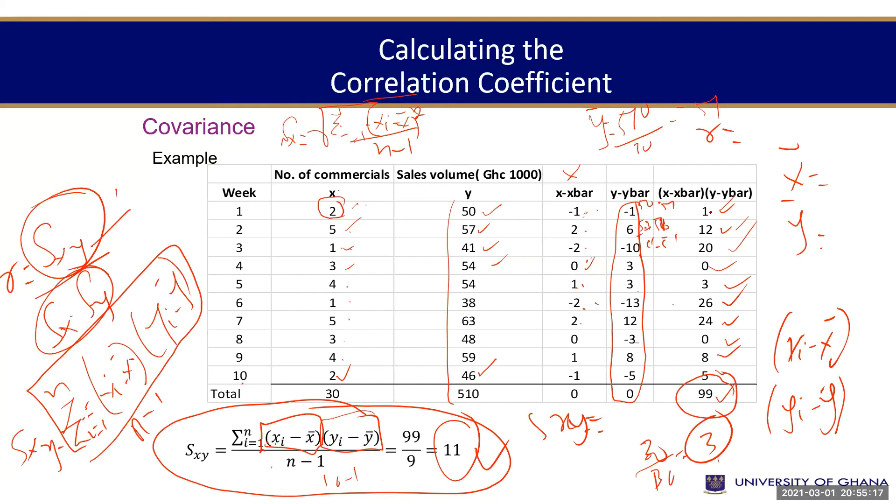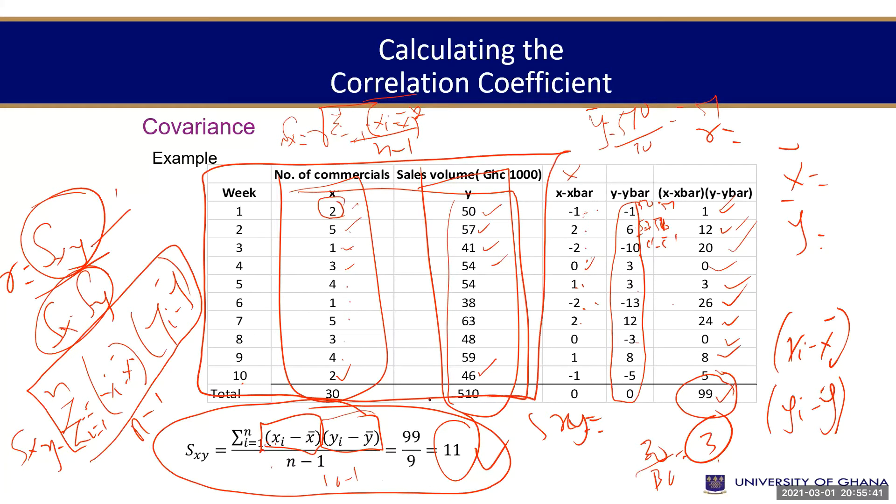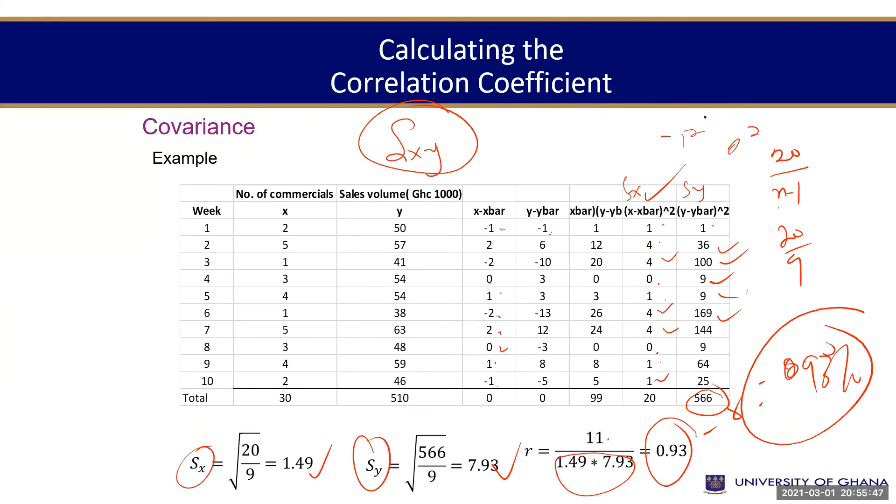So it means that, would I give you only the x bar and the y bar? No, no, no. I only give you x values and y values. You have to create this column, that column, this column, then this column, and that column. All these must be created by you by using the formulae or the formula I provided. Is that okay?